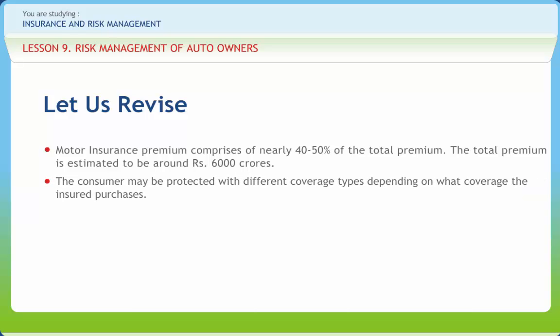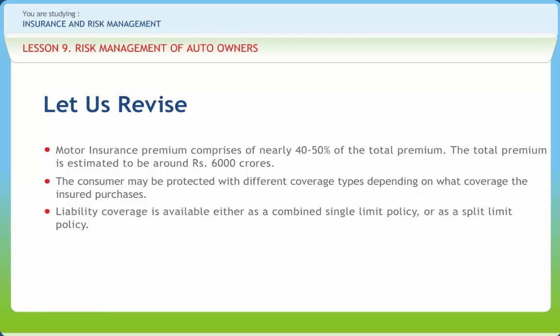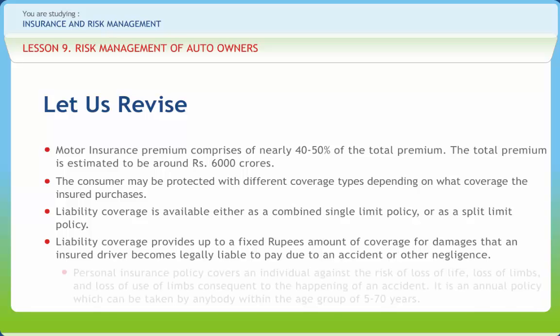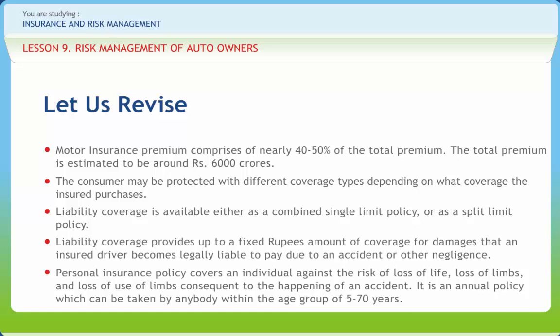Consumers may be protected with different coverage types depending on what they purchase. Some states require motorists to carry minimum levels of auto insurance coverage to ensure drivers can cover the cost of damages in an automobile accident. Liability coverage is available as a combined single-limit policy or a split-limit policy, providing up to a fixed rupee amount for damages an insured driver becomes legally liable to pay. Personal insurance policy covers an individual against loss of life, loss of limbs, and loss of use of limbs due to an accident, and is an annual policy available for those aged 5 to 70 years.